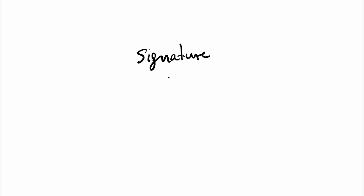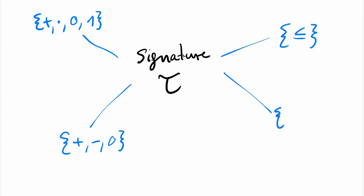A structure has a signature and a signature is used to talk about structures. This is the reason why some authors say language instead of signature. So to define the syntax of first-order logic, we first fix a signature tau.